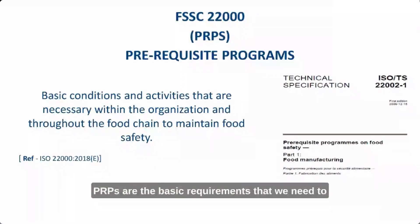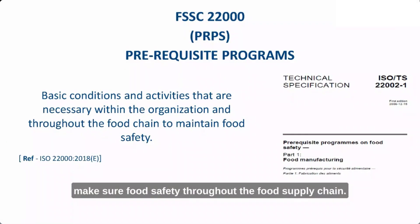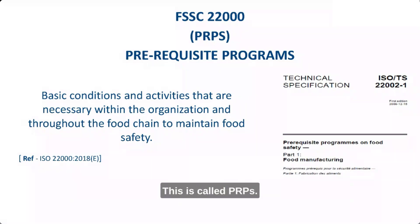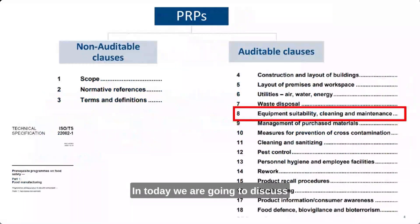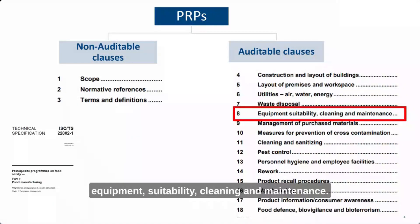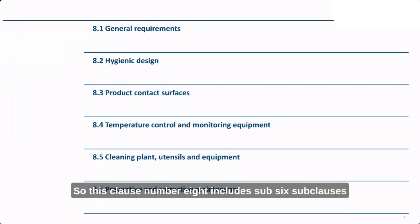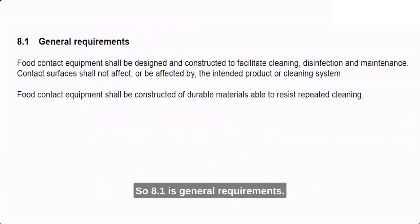PRPs are the basic requirements that we need to ensure food safety throughout the food supply chain. Today we are going to discuss PRP number eight, which is equipment suitability, cleaning, and maintenance. Clause number eight includes six sub-clauses which we will discuss one by one.